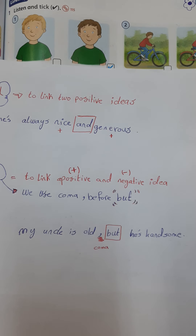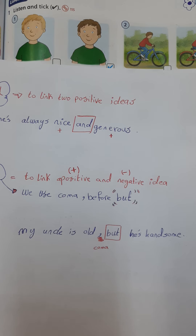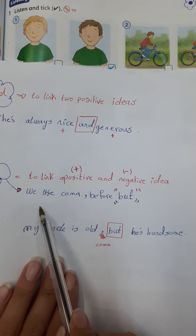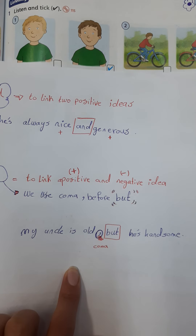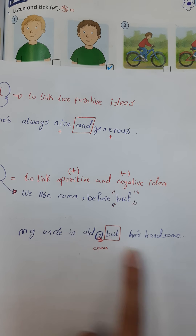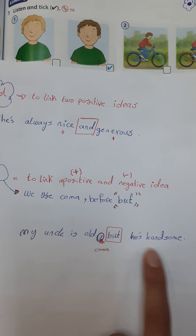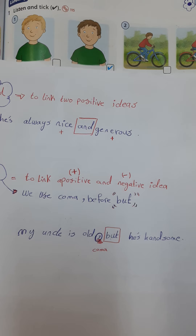The meaning of 'but' is 'however' or 'but' in Arabic — 'walaken.' For example: 'I am hungry but I don't want to eat.' Two different, contrasting ideas. Another example: 'I am tired, but I cannot relax.' The key difference is that we use a comma before 'but,' because the idea has changed. When the idea changes, you put a comma.